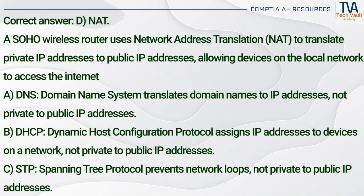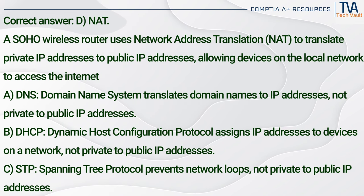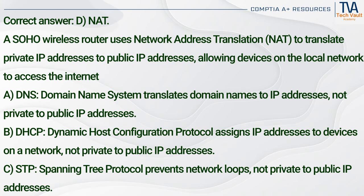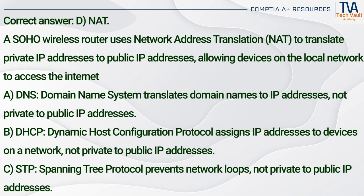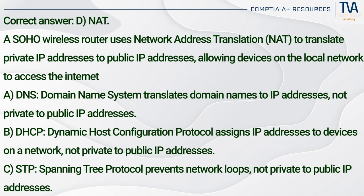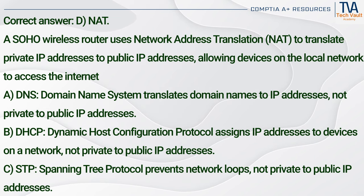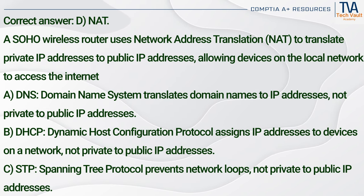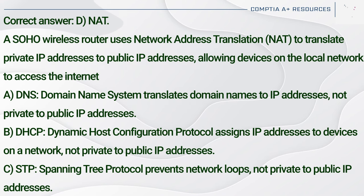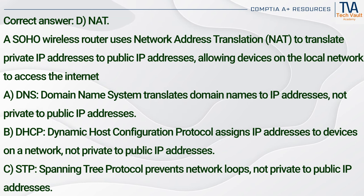Correct answer: D. NAT. A SOHO wireless router uses Network Address Translation (NAT) to translate private IP addresses to public IP addresses, allowing devices on the local network to access the internet. DNS (A) translates domain names to IP addresses, not private to public IP addresses. DHCP (B) assigns IP addresses to devices on a network, not private to public IP addresses. STP (C) — Spanning Tree Protocol — prevents network loops, not private to public IP address translation.